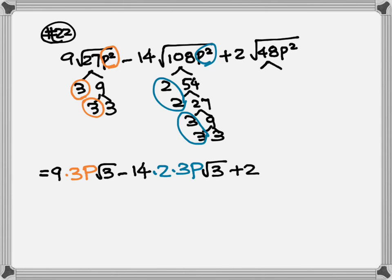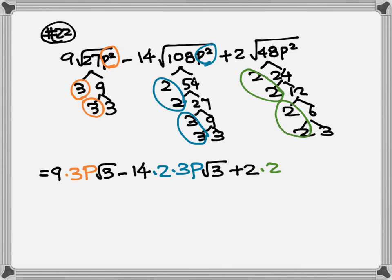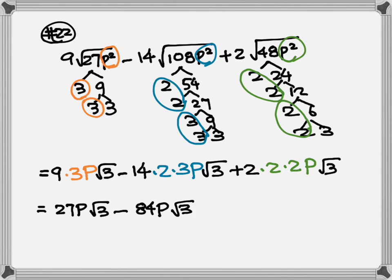Bring down the plus 2, break down 48: 2, 24; 2, 12; 2, 6; 2 and 3. Pair of 2 — one 2 goes out; another pair of 2 — another 2 goes out; pair of p from p² — one p goes out; 3 by itself stays inside. Now multiply all numbers outside: 9 times 3p gives 27p, square root of 3; minus 14 times 6p gives 84p, square root of 3; plus 2 times 4p gives 8p, square root of 3. Numbers inside are all exactly the same, so add or subtract outside: 27 minus 84 plus 8 equals negative 49p, square root of 3.